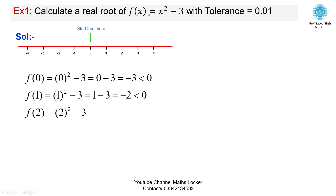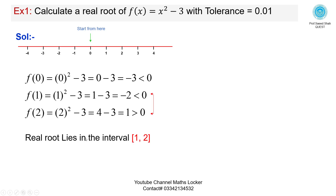Take the next number 2: f(2) = 2² - 3 = 4 - 3 = 1, which is greater than 0. The sign changes, which means the root must lie in the interval [1, 2]. Therefore, the real root lies in the interval 1 and 2.